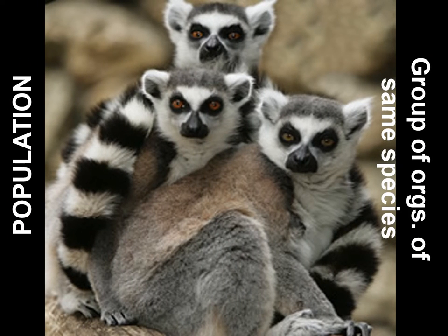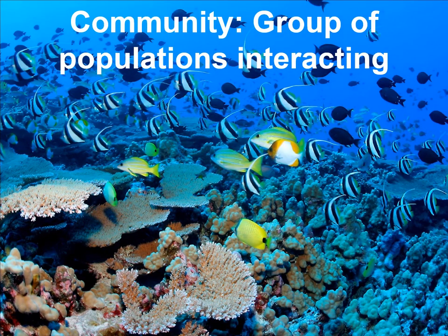A population is a group of organisms of the same species. Right here you can see these ring-tailed lemurs — there are three of them, which we can classify as a very small population. A community, which is bigger than a population, is a group of populations interacting together. Here you can see a coral reef environment with different populations of fish interacting in this habitat.